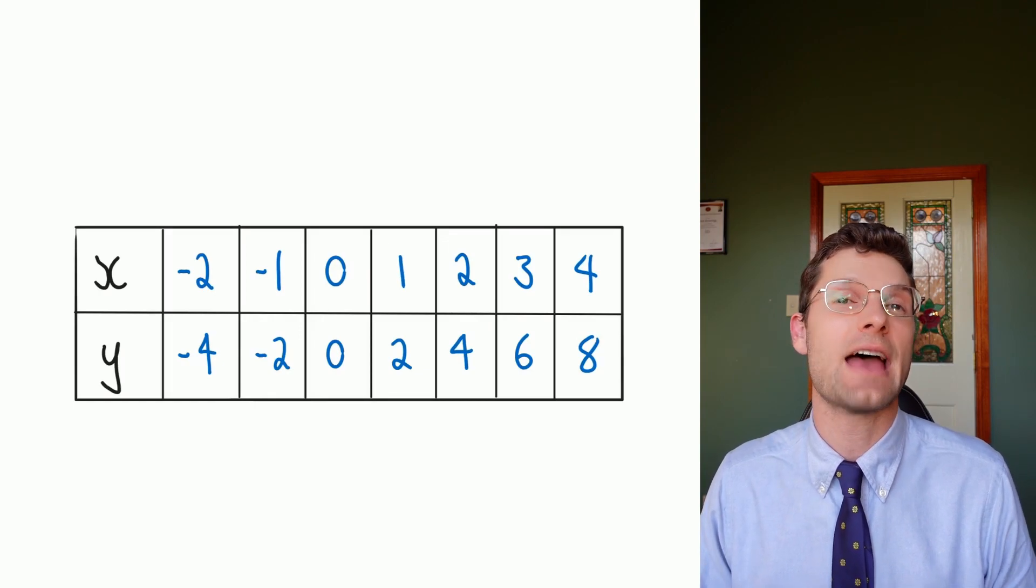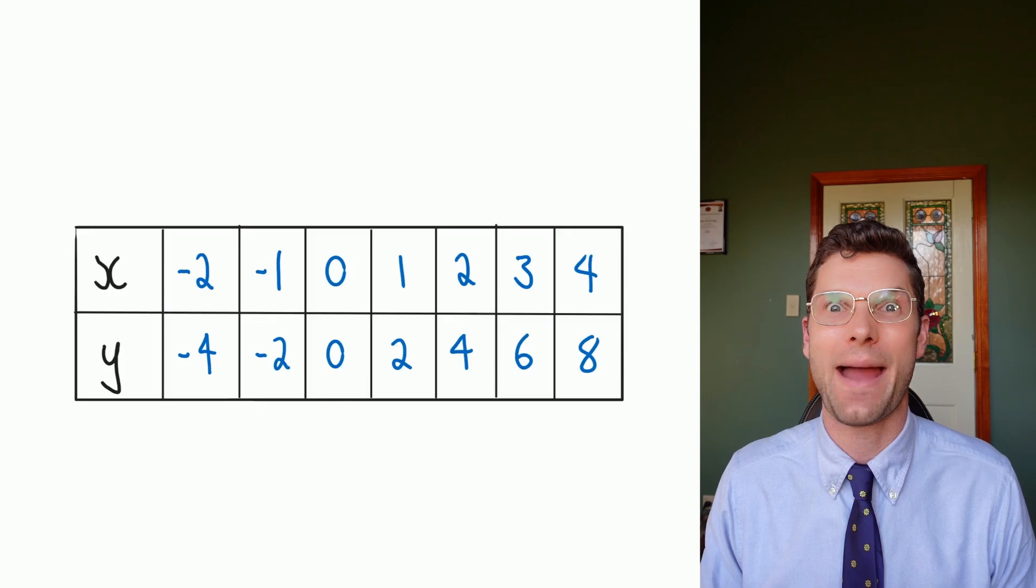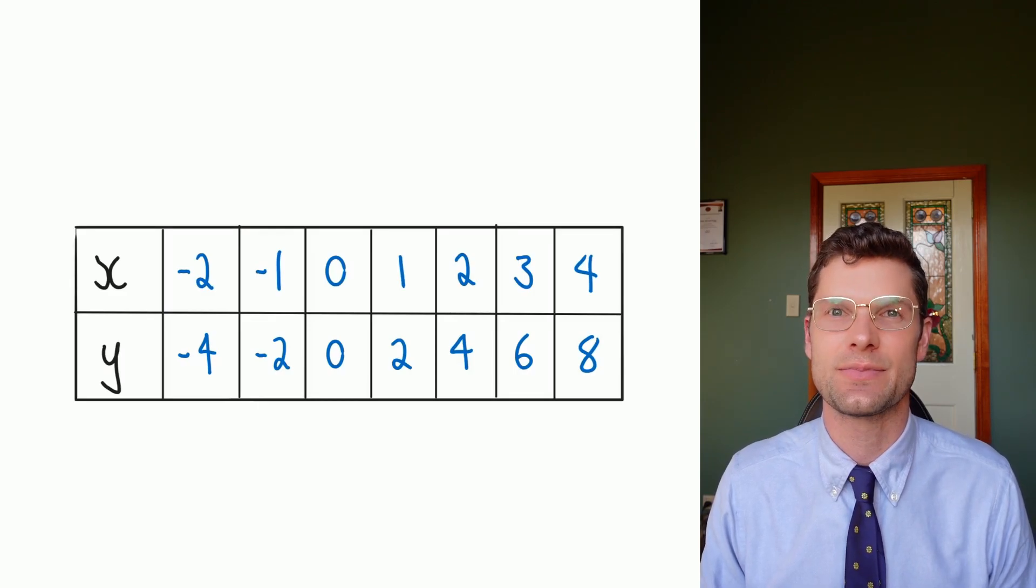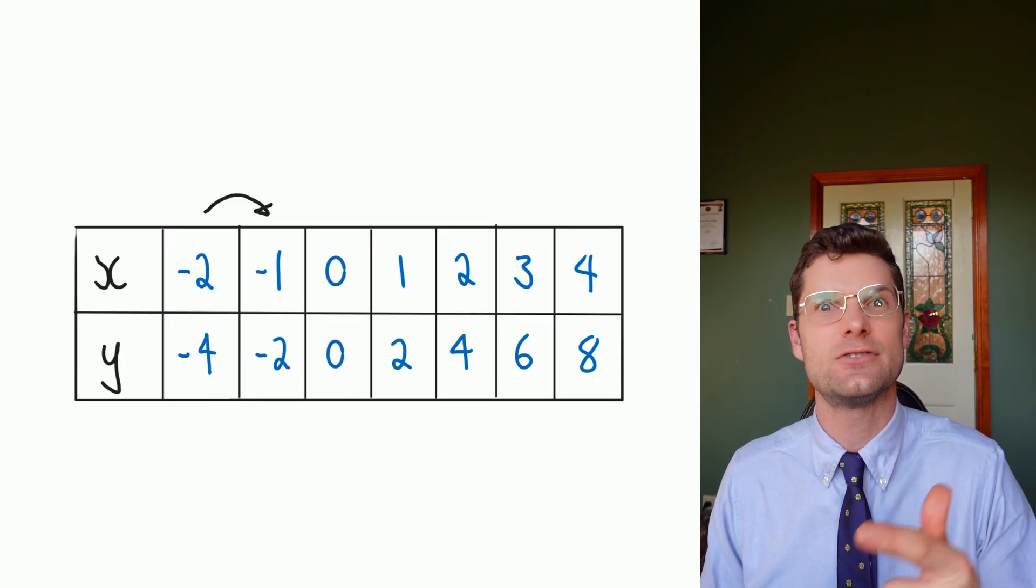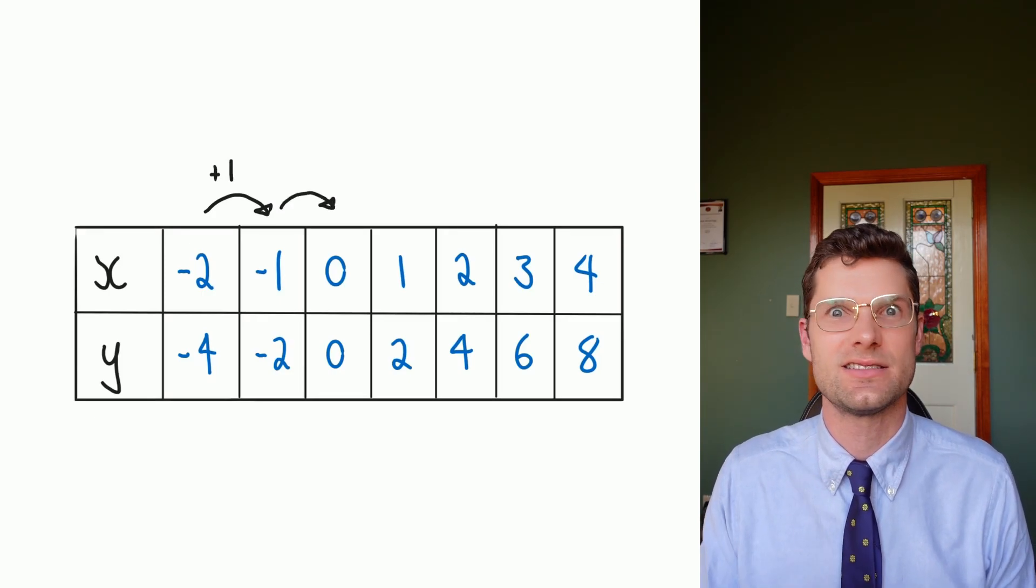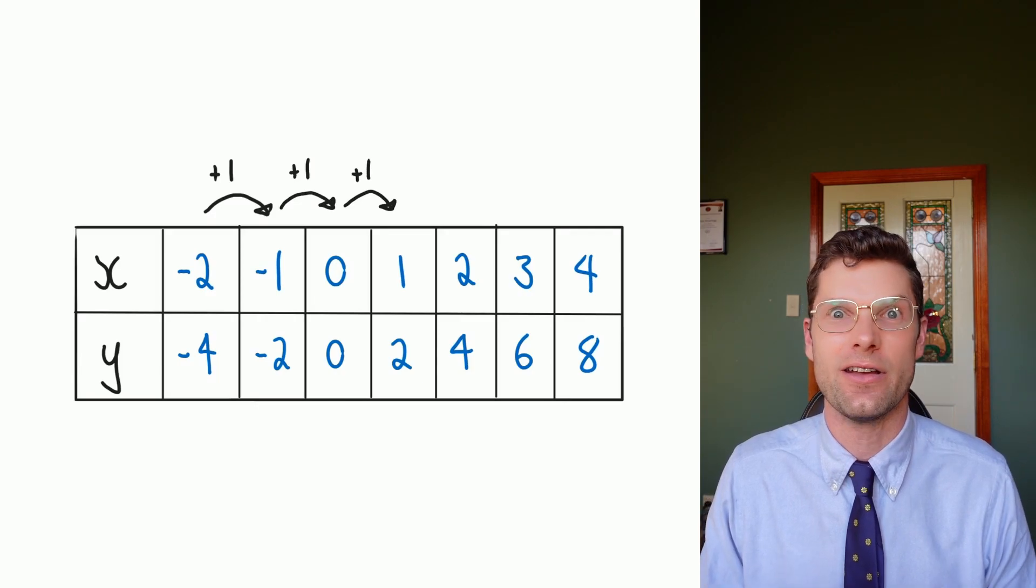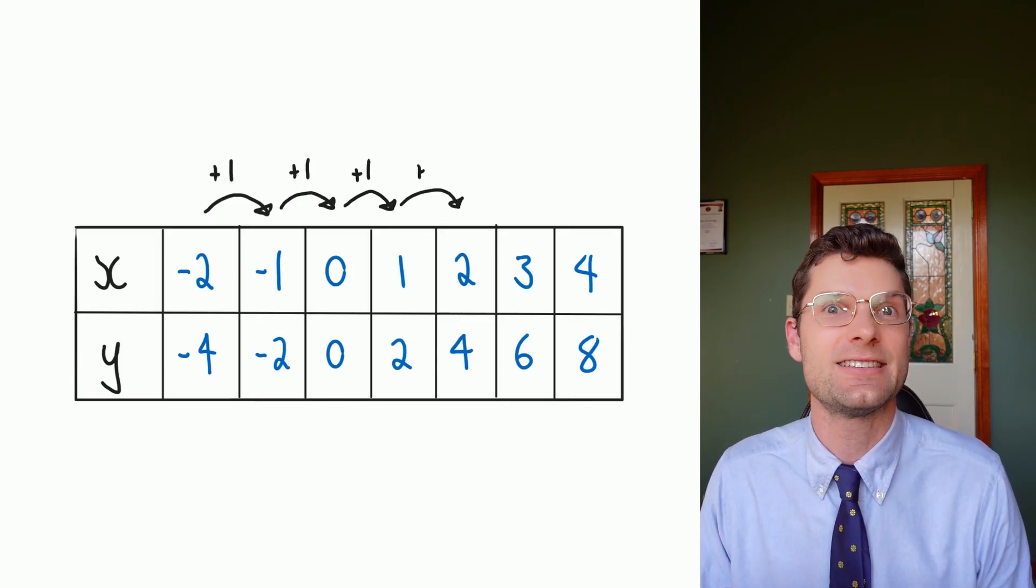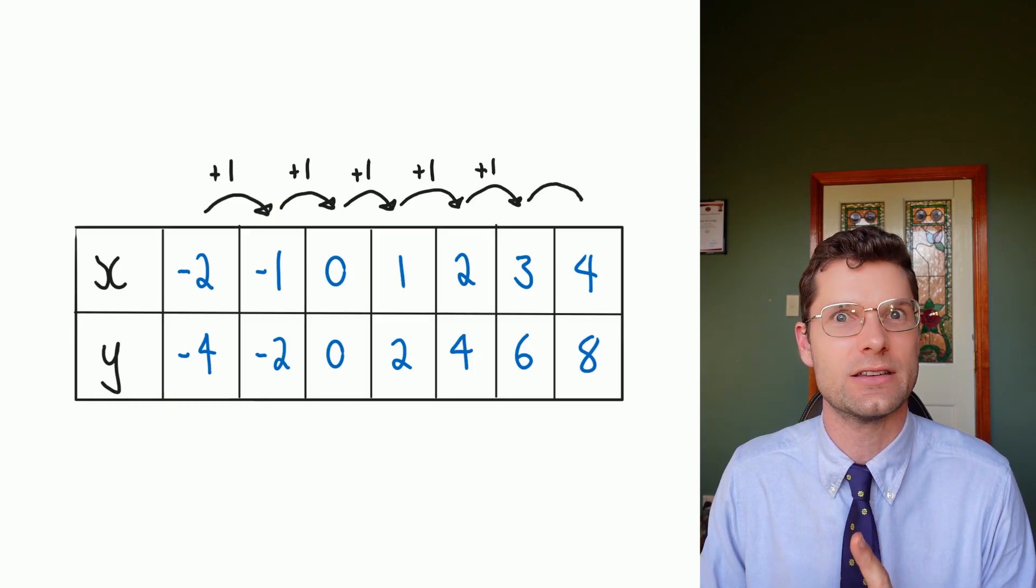The reason that they do come out as a perfectly straight line is because we can see a very quick pattern in this table of values. Let's just look at the x's. How are the x's changing every single time? From -2 to -1, we've just done +1. From -1 to 0, +1. 0 to 1, +1, and so on. So all that's happening to the x's, every time we go up, we're going across to the right one spot.